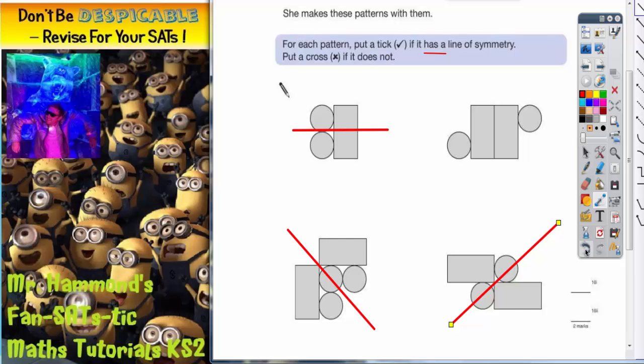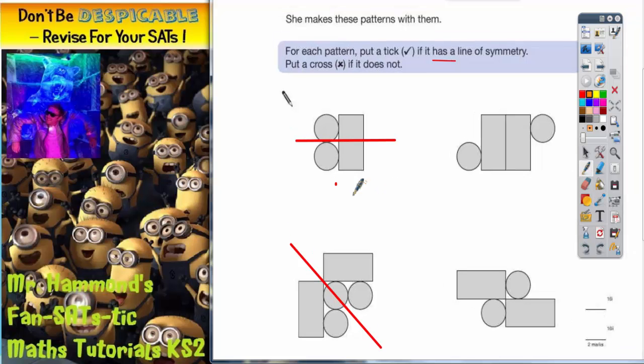So check with your mirror. Ask your teacher for a bit more help on this one if you need it. But they are the two answers. So we need to tick this shape, we need to tick this shape, we need to cross these two. And that's it.